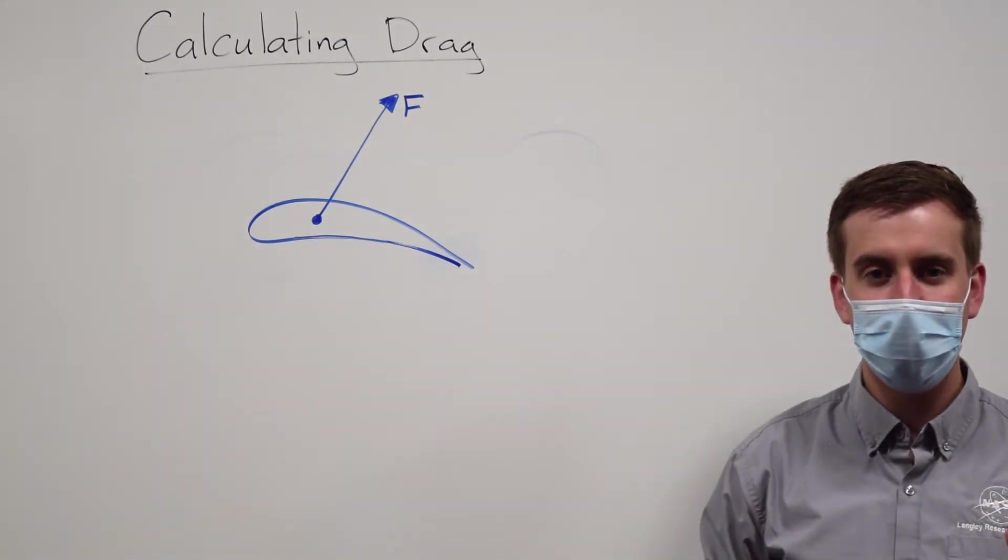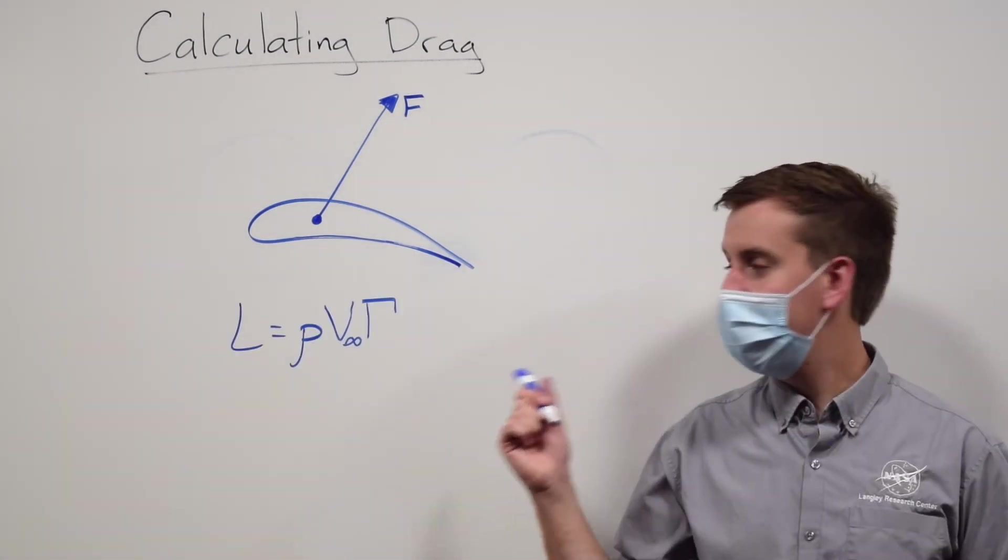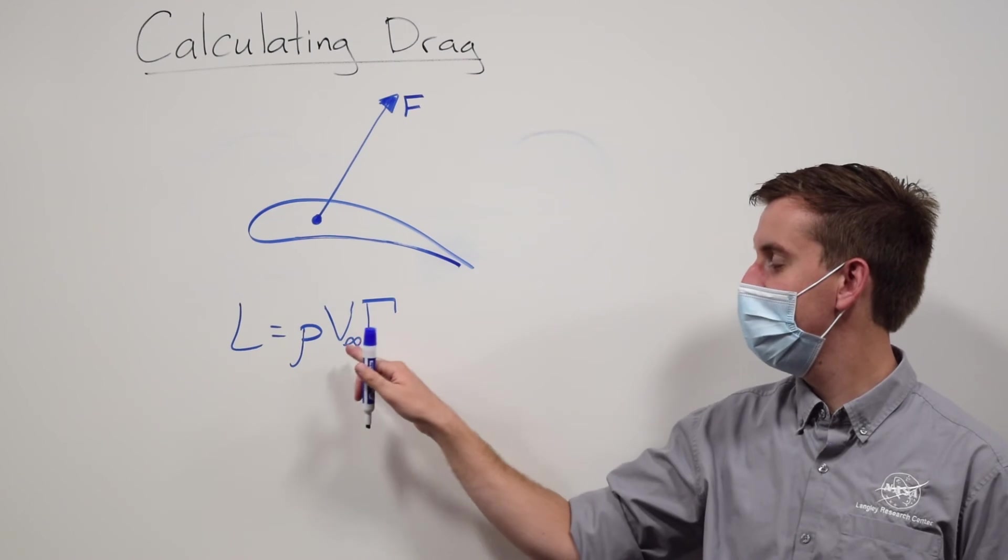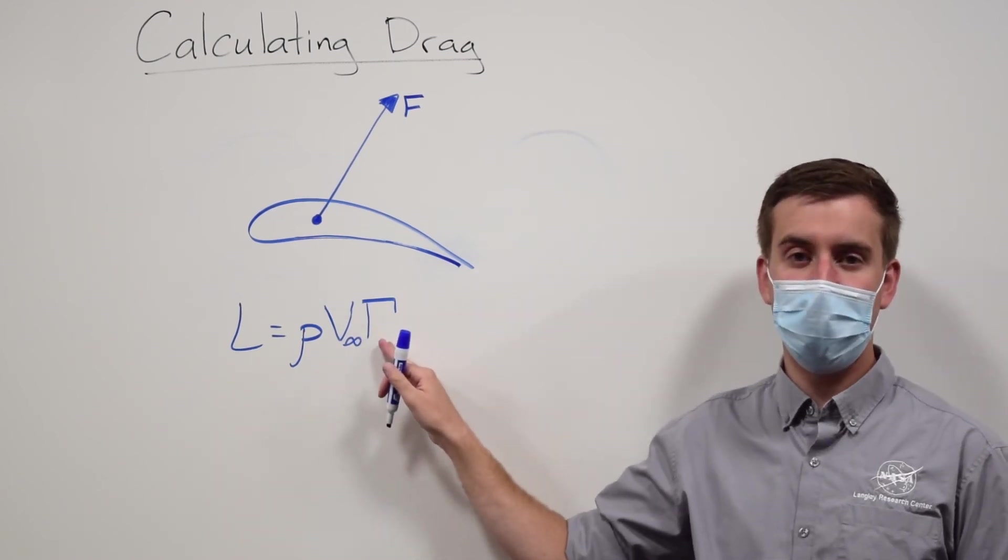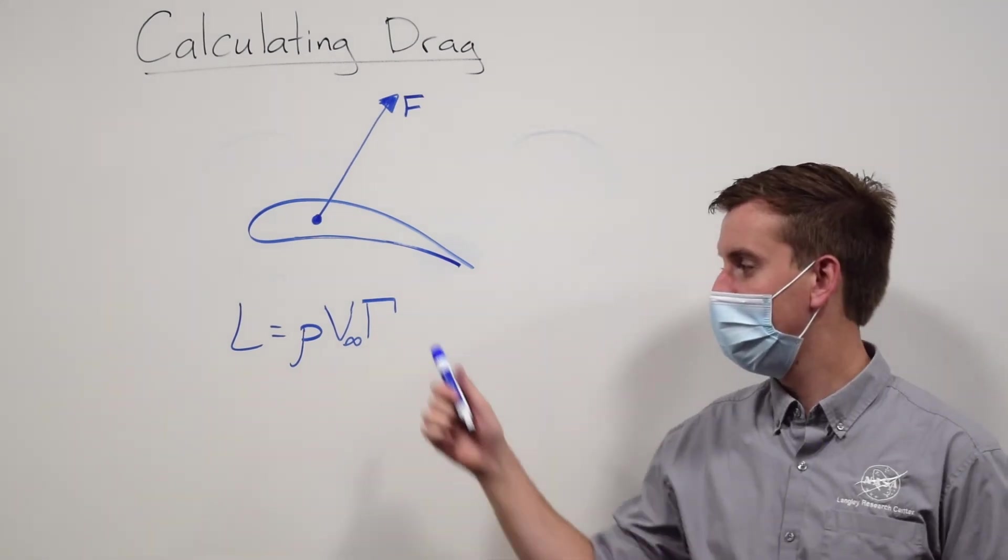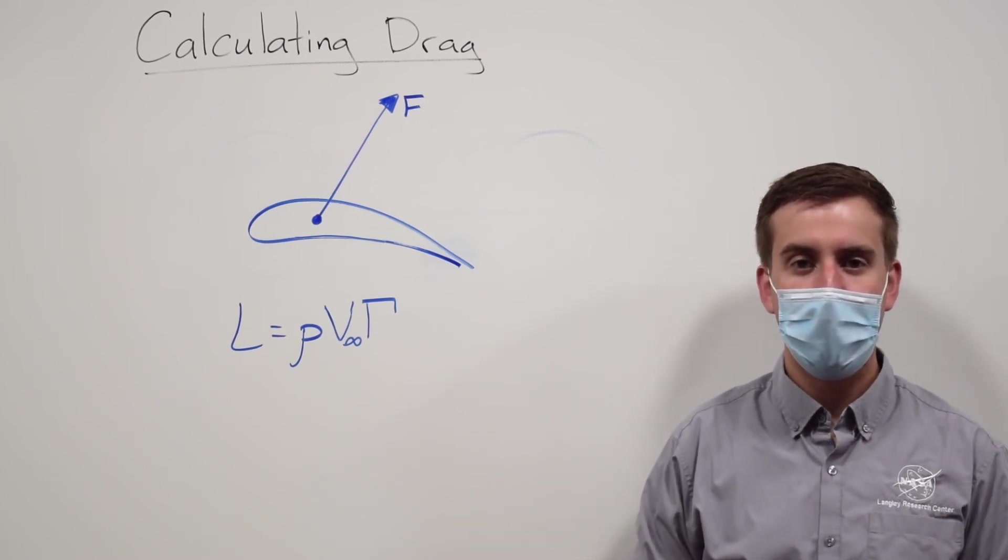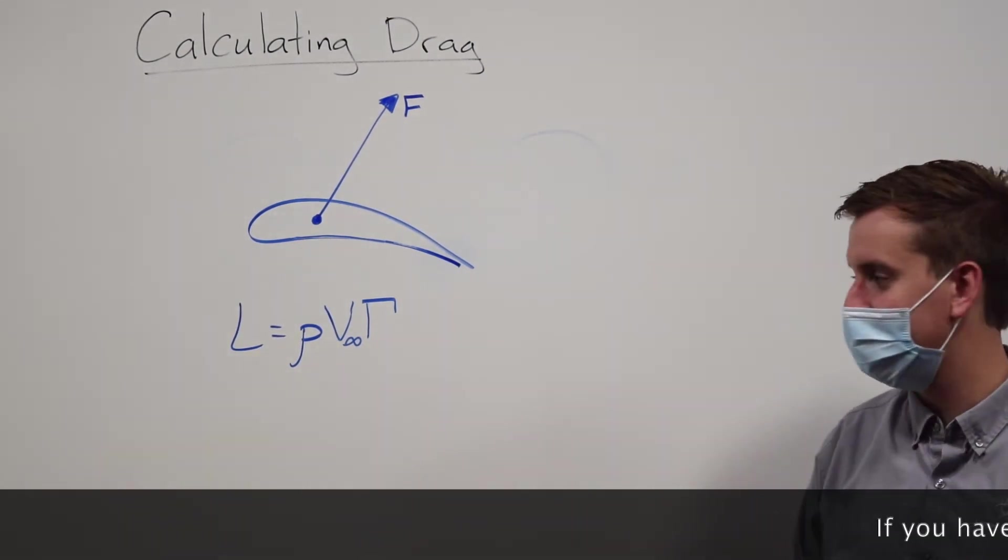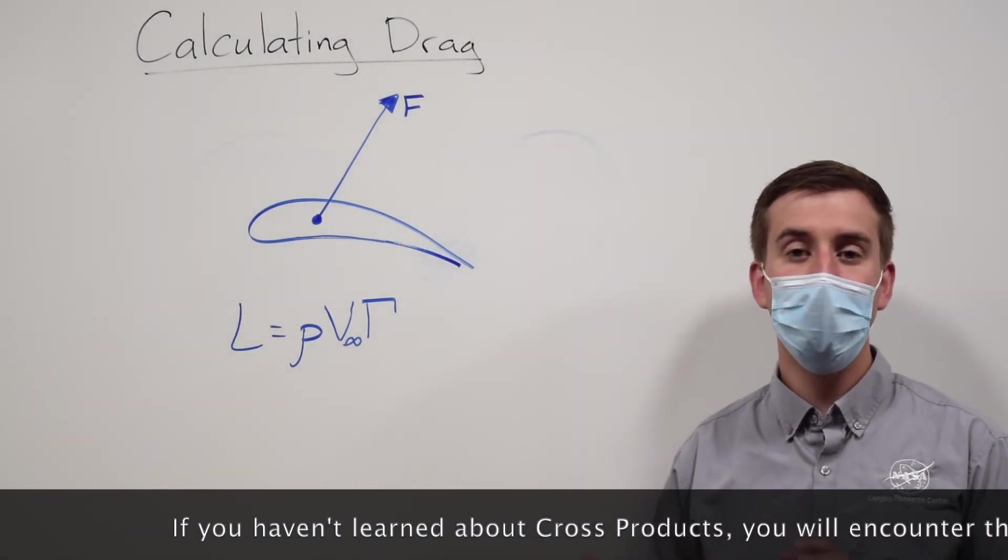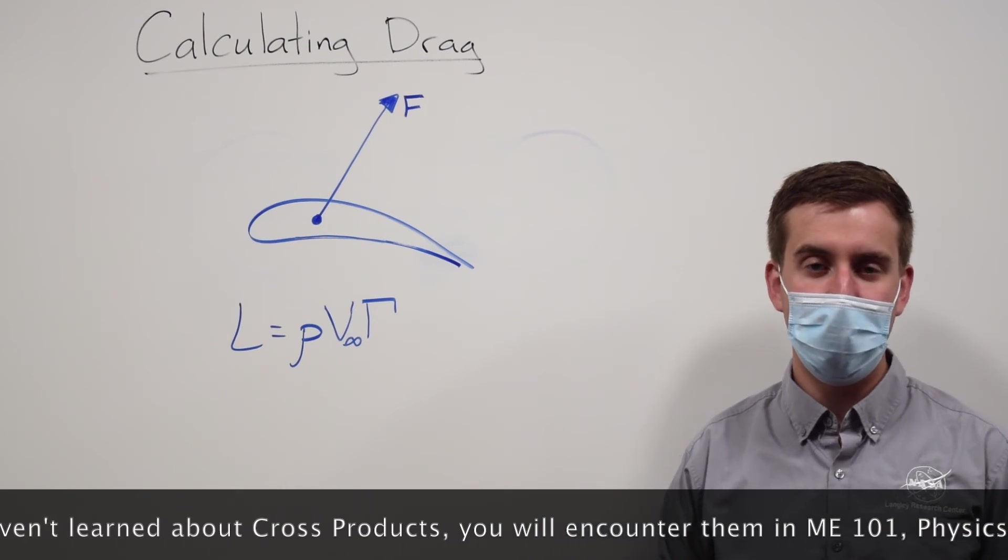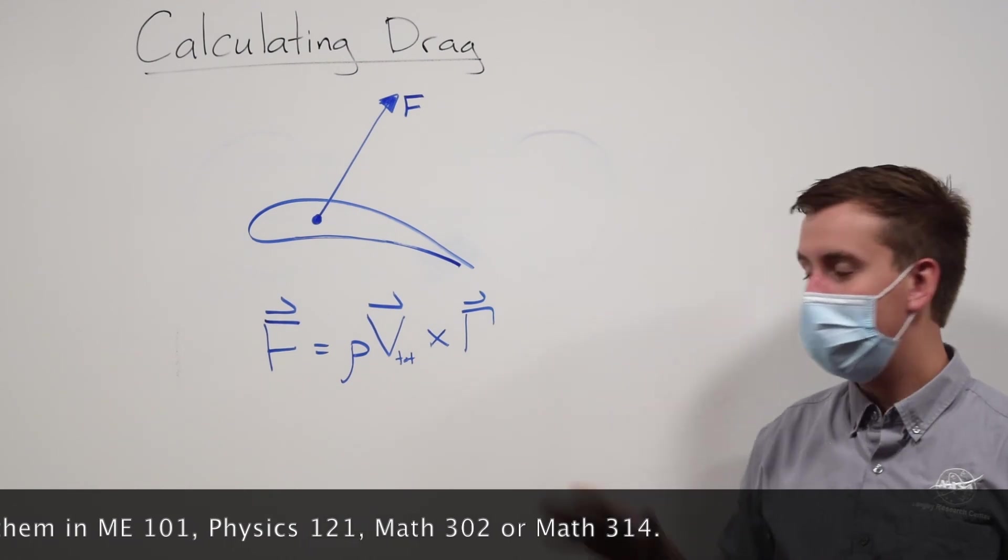We said that lift was calculated using the circulation of the air where lift is equal to the density of the air times the velocity of the air times the circulation of the air. And there's all kinds of mathematical ways to calculate the circulation, and computers do it all the time. However, there's a more general way to write this, and that's to use a cross product, which if you haven't learned about in your school yet, you will definitely learn about when you take either math 302 or 314.